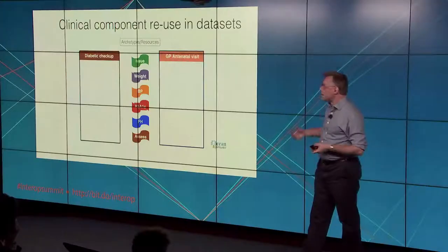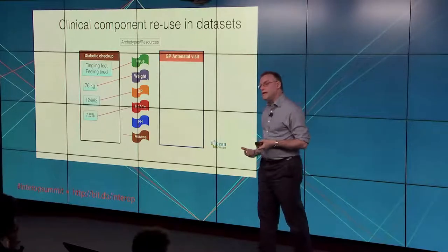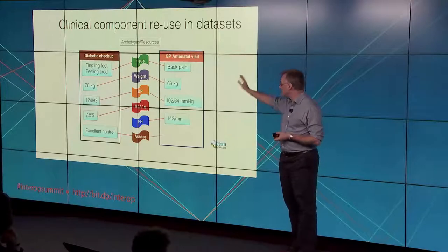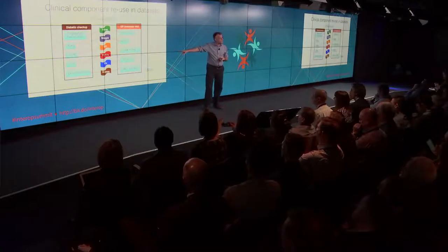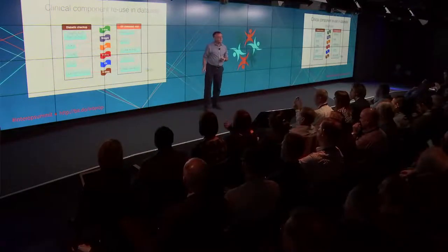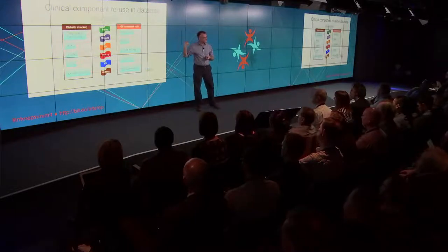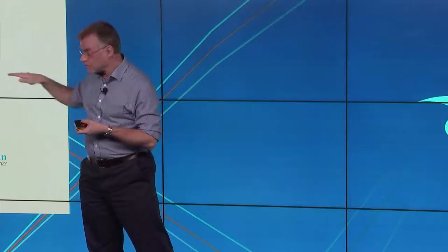Here's an example of reusing components in different end-use data sets. On one hand we've got a diabetic check-up; on the other end, a GP antenatal visit. In the middle, we've got these core components that we're really working on — these are our sources of truth — and then they're shaped differently and used differently. There's a different set used in the antenatal visit, which has a fetal heart that isn't required in the diabetic check-up, but there's a great deal of commonality and an ability to query across these messages. Just give me the last 10 blood pressures — I don't care what context it was taken in. If we get the components right, that will do it.